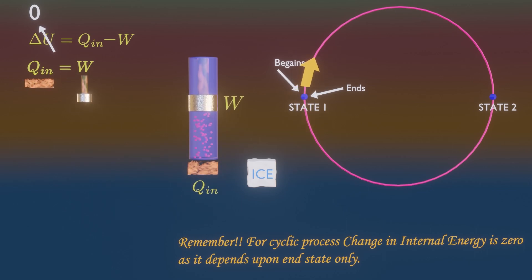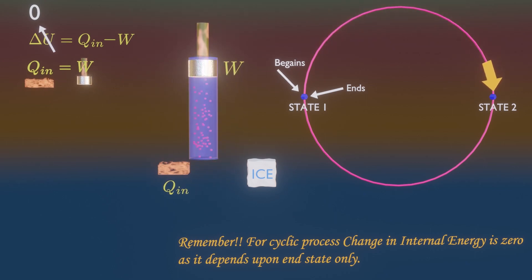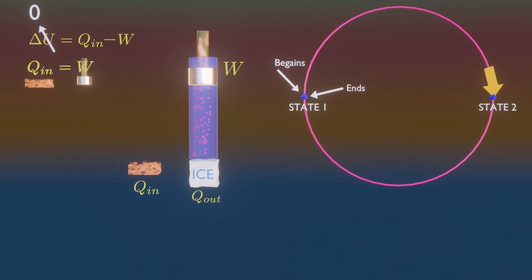But every heat energy cannot be converted to work. That is impossible because without rejecting heat to a colder body, this device cannot complete the cycle and it will get stuck.